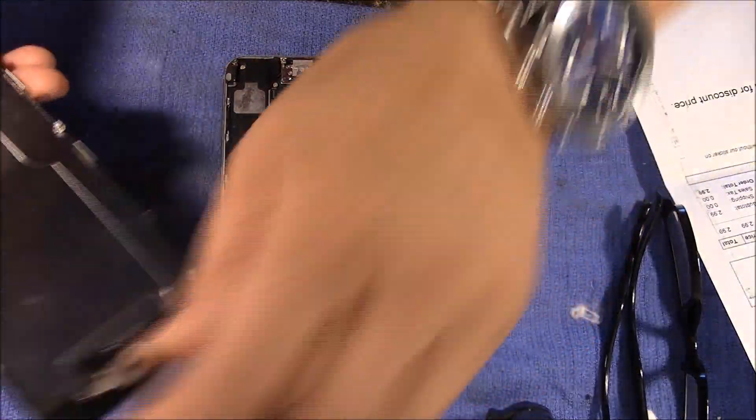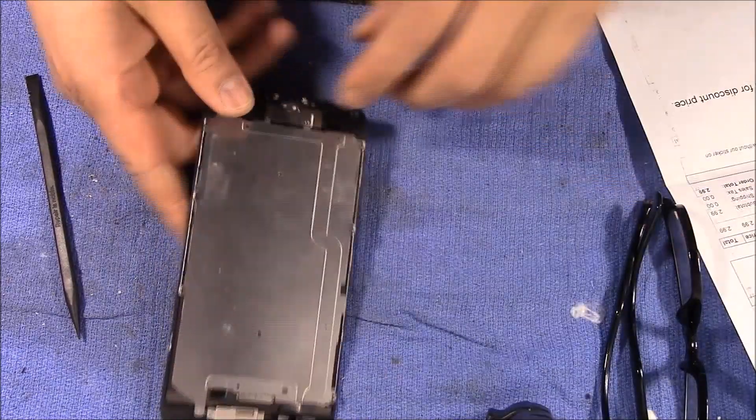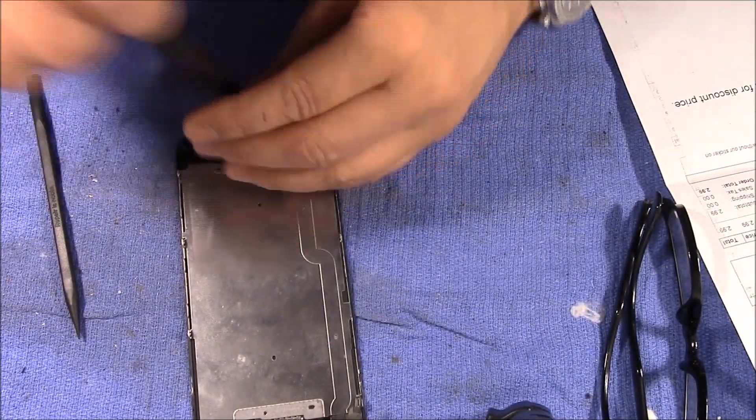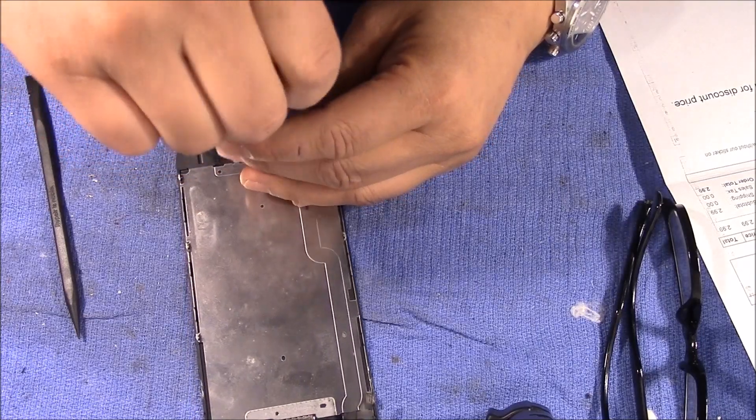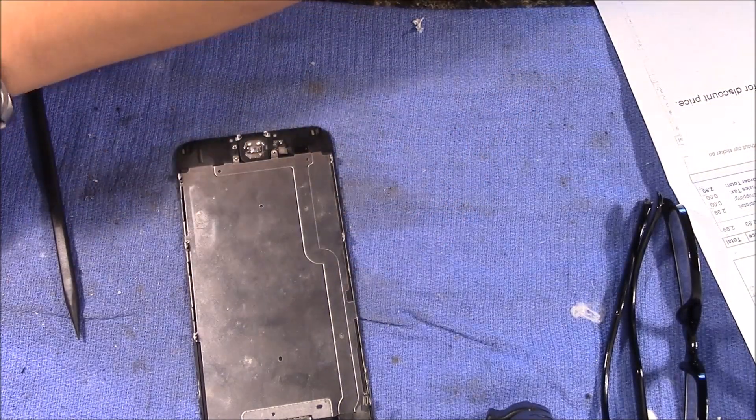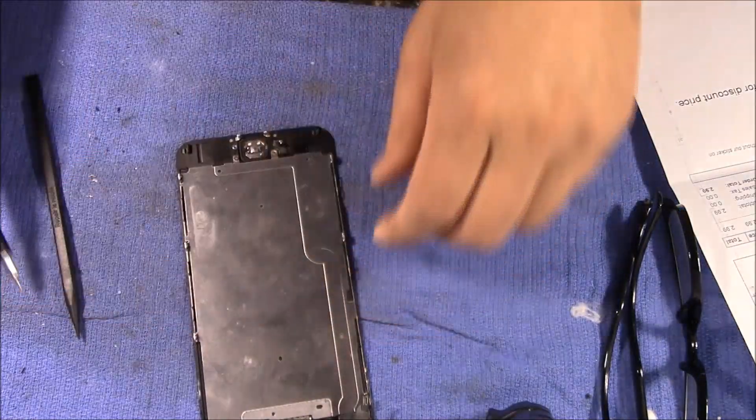All right so now I've got the screen separate from the body and so I'm going to take apart the area with the home button. And there it is.